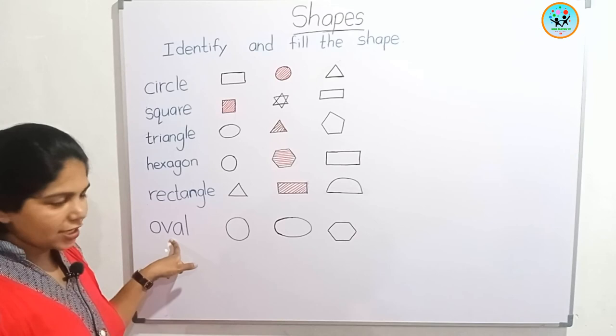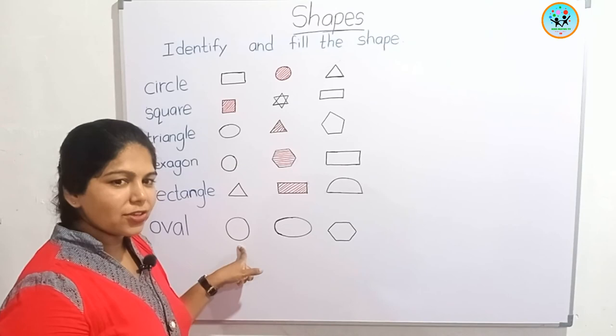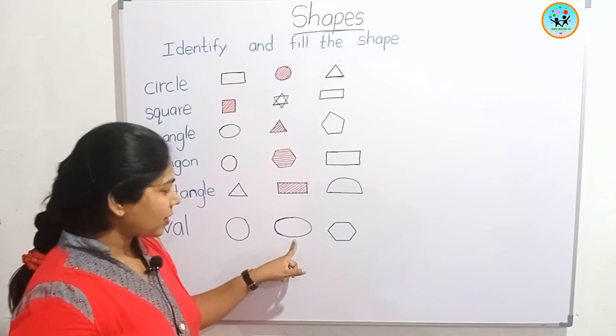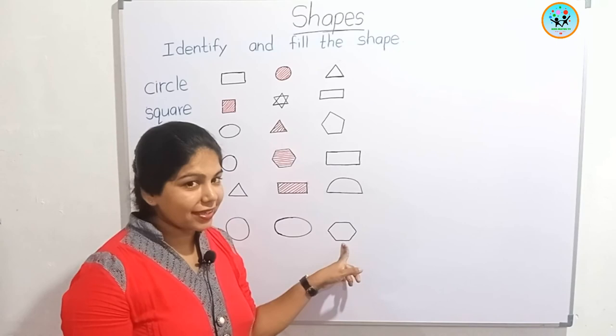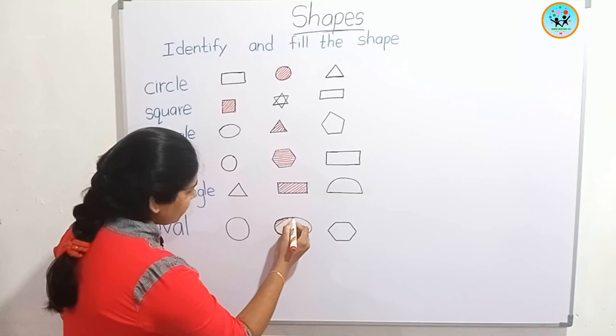Last one — oval. Is this oval? No. Is this oval? No, this is a circle. This is the oval shape. This is again hexagon. Yes, we found the oval shape.